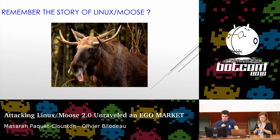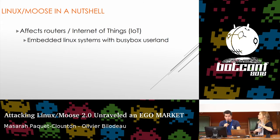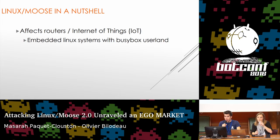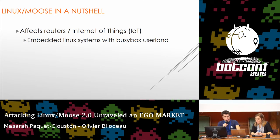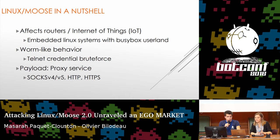Linux MOOSE — we had the fancy moose pictures last year. In a nutshell, it affects routers and Internet of Things devices. What it specifically targets is embedded Linux systems with a BusyBox userland — IP cameras, DVRs, and mostly routers. It has a worm-like behavior, spreading through Telnet credential brute force, which everyone knows about now because of Mirai. Its main payload is a SOCKS v4, v5, and HTTP/HTTPS proxy service.